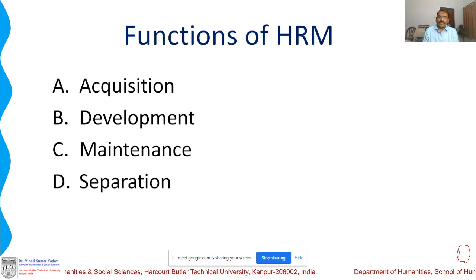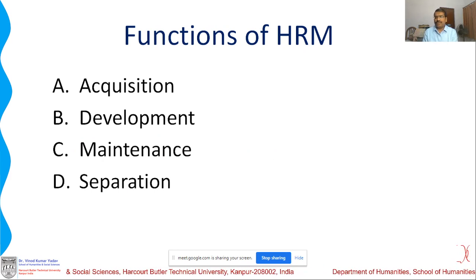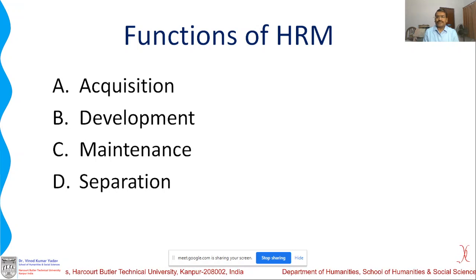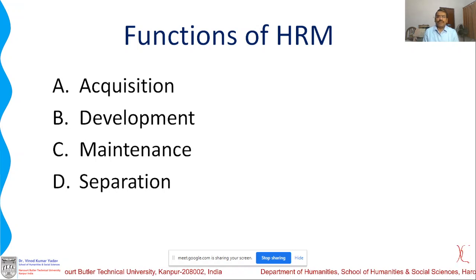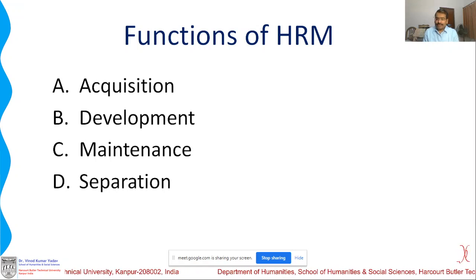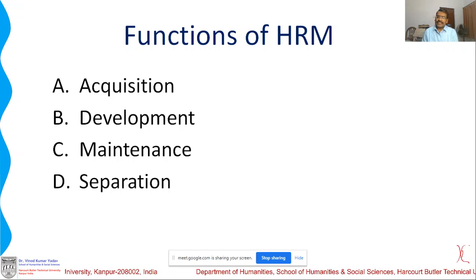That is what human resource management means. There are four core sets of functions: first, acquisition of manpower or human resource; second, development of people; third, maintenance of those people; and fourth, the separation process.